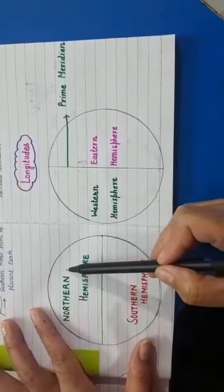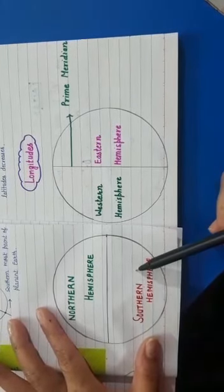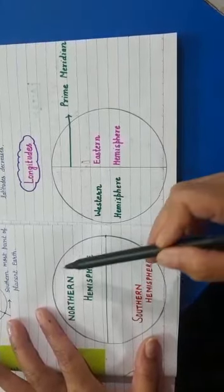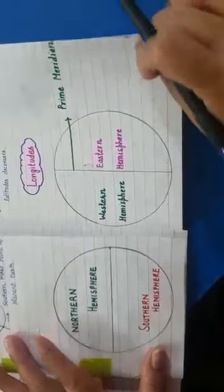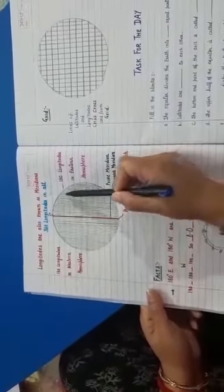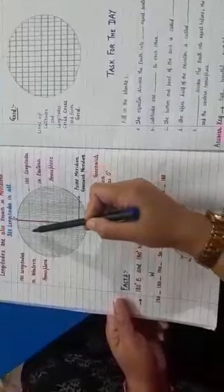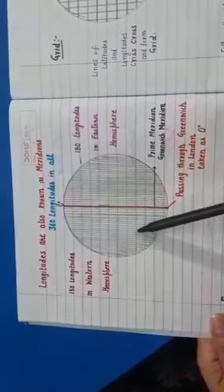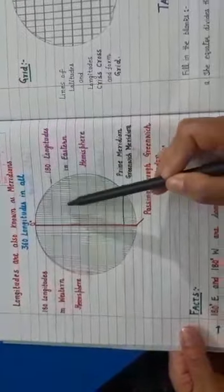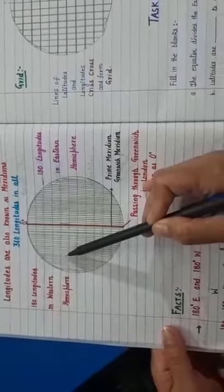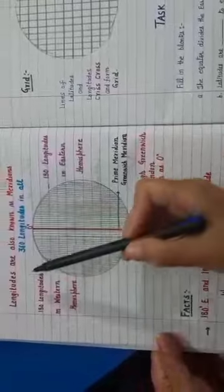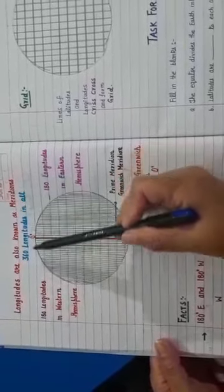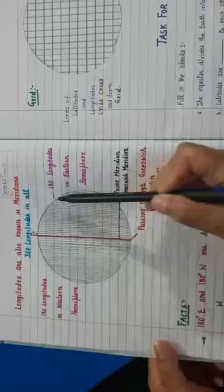We have 90 latitudes in the Northern Hemisphere and 90 in the Southern Hemisphere. These latitudes are known as parallel lines. The same way, we have 180 longitudes in the Eastern Hemisphere and 180 longitudes in the Western Hemisphere. These longitudes are called meridians. Latitudes are known as parallels and longitudes are known as meridians.